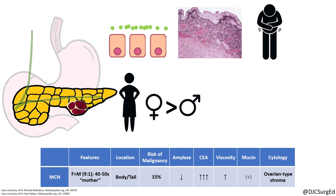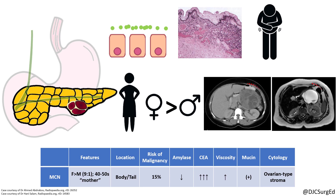These lesions do not communicate with the duct and on fluid analysis are characterized by viscous fluid with an elevated CEA level, low amylase, and positive for mucin. On cross-sectional imaging, they most commonly appear as solitary unilocular lesions but may also contain septations or a rim of calcification. All suspected MCNs should be resected in suitable operative candidates.